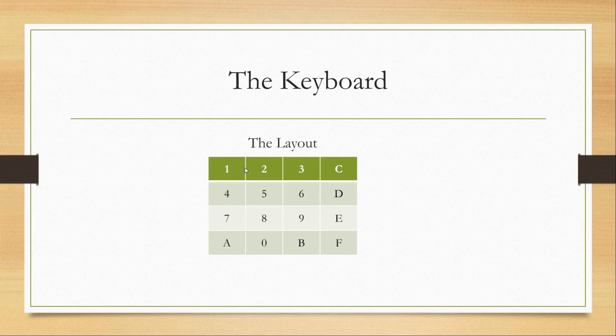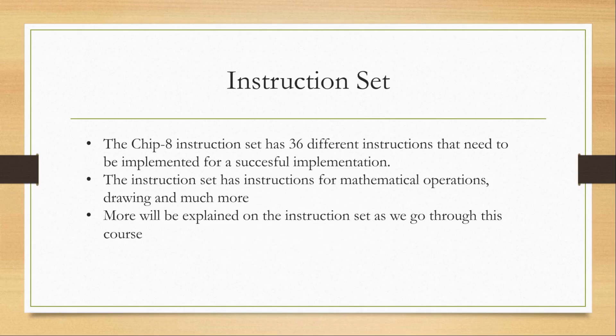This is the actual layout of the Chip 8 keyboard. Since we don't own the real hardware, we can't represent it physically, but this is what it looks like. The instruction set of the Chip 8 has 36 different instructions that need to be implemented for a successful implementation, responsible for mathematical operations, drawing, bitwise AND, bitwise OR, and more. We'll explain more about the instruction set as we go through this course.